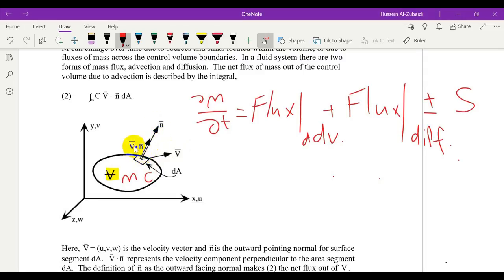This control volume is located within a Cartesian coordinate as shown. Here this is the x-axis, y-axis, z-axis. The velocity in the x-axis is u, in the y-axis is v, and in the z-axis is w.